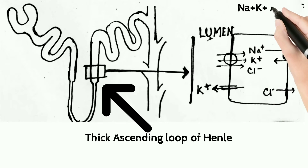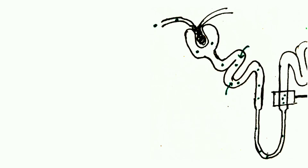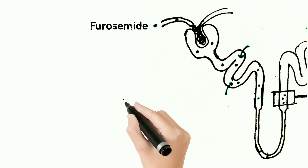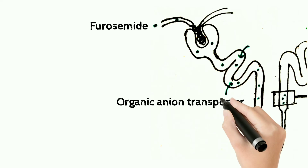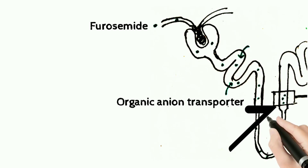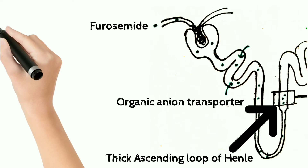In the thick ascending loop of Henle, it is very important to maintain the osmotic gradients between medulla and cortex. It actively absorbs sodium, potassium, and chloride. Furosemide, coming from the blood, is rarely metabolized and is freely secreted in the GFR and also secreted in the proximal tubule by the organic anion transporter. After this secretion, furosemide reaches the thick ascending loop of Henle and acts on the sodium-potassium-chloride channels.